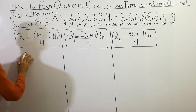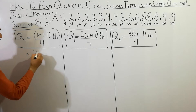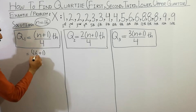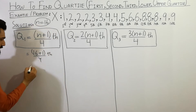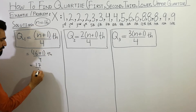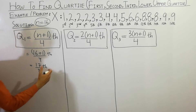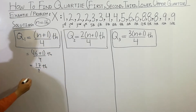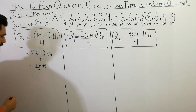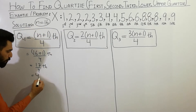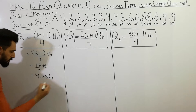So first of all, I am going to calculate the first quartile. Put (16 + 1) over 4, that is 17 divided by 4. By using a calculator, you will get 4.25 terms.